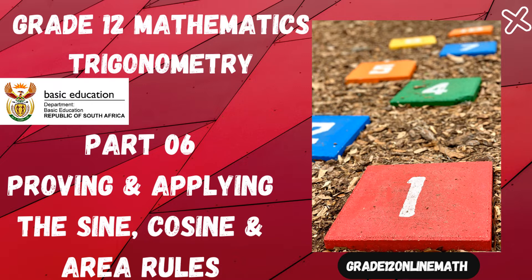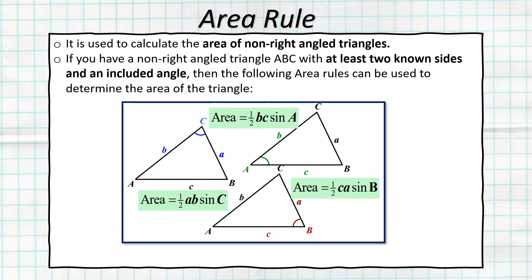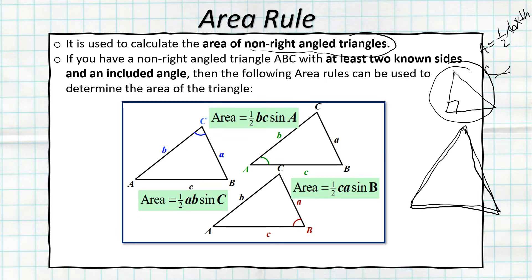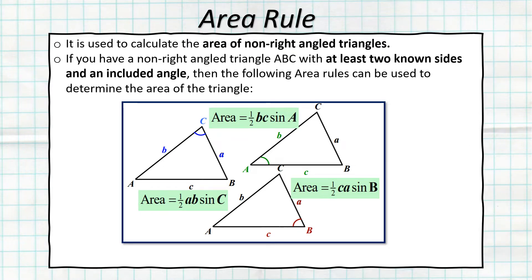Let's start with the area rule. The area rule is used to calculate the area of a non-right-angle triangle. For example, if I have a non-right-angle triangle and I want to calculate its area — for a right-angle triangle, the formula is one-half base times perpendicular height — but for a non-right-angle triangle, we use the area rule.